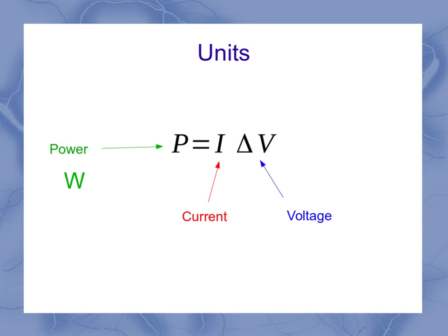Now in terms of units, power is supposed to be in watts, current is measured in amps, and voltage is measured in volts. So that means a watt must be equal to an amp volt.